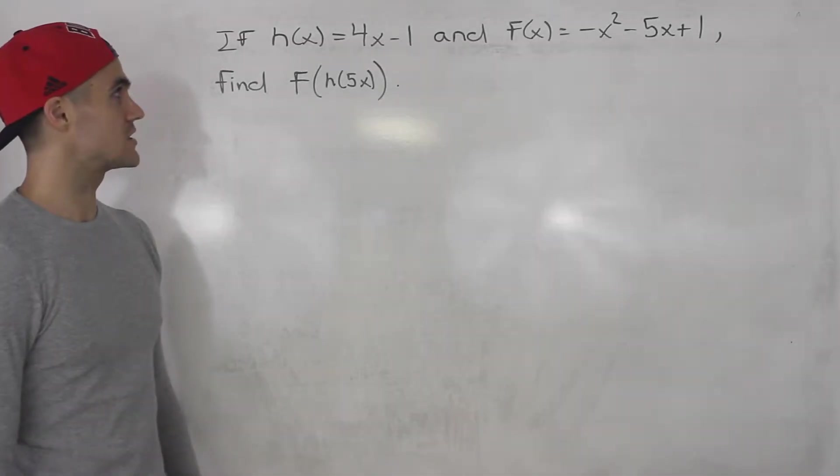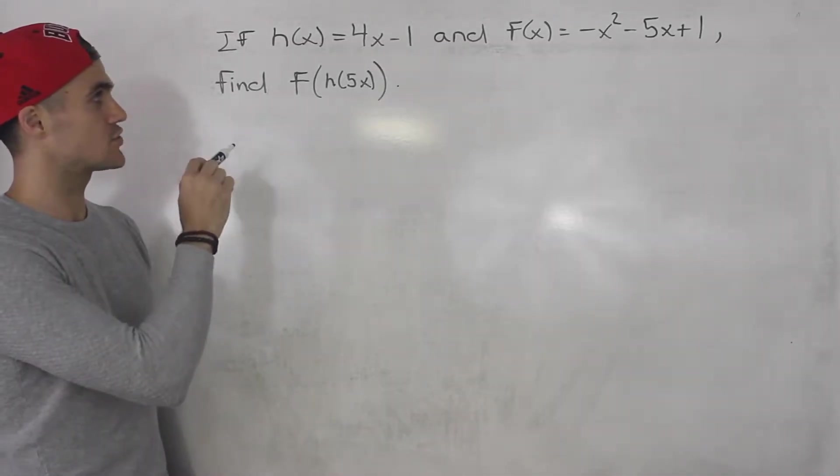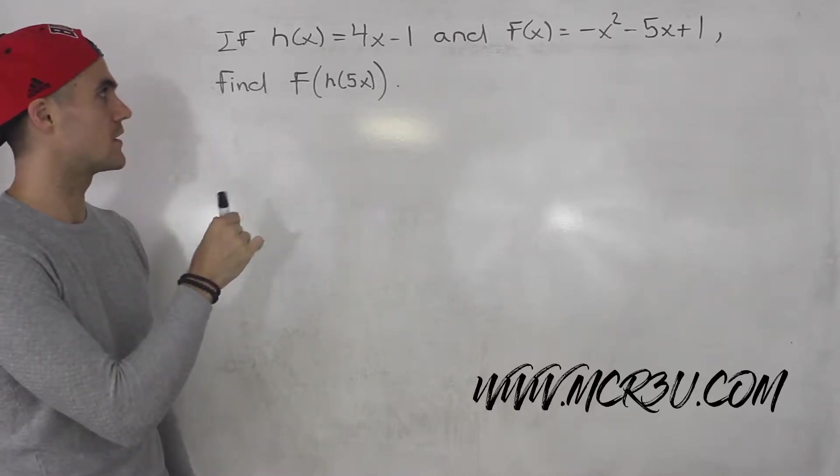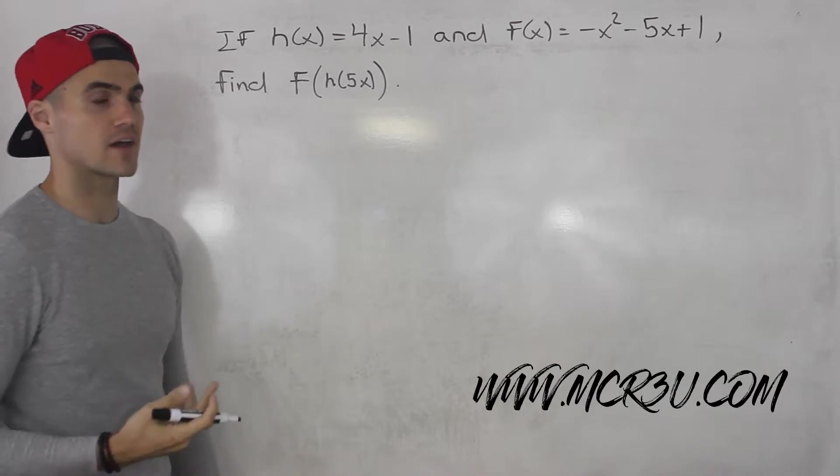What's up everybody? In this question, we're given two functions: h(x) = 4x - 1 and f(x) = -x² - 5x + 1. We have to find f(h(5x)).